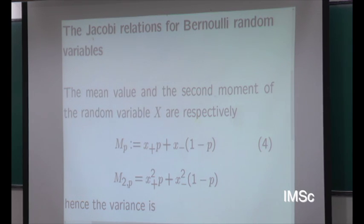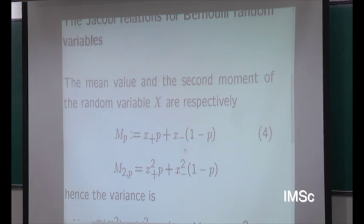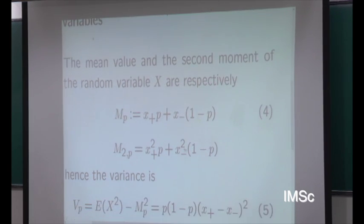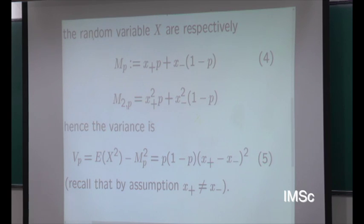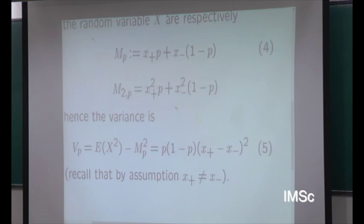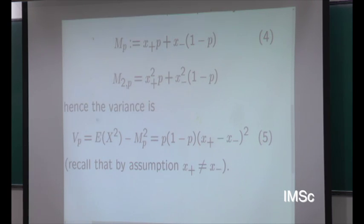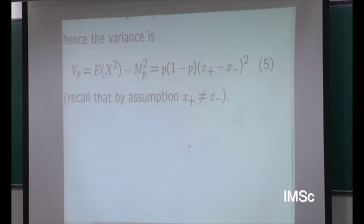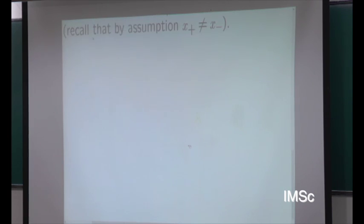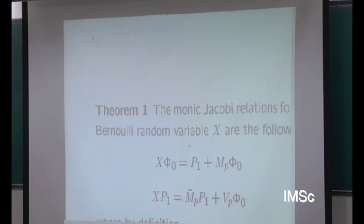For this, we introduce the mean value. The mean value is, of course, very well known. The second moment is then the square. Remember, X plus and X minus are arbitrary real numbers. Therefore, we compute the variance, which is also very well known.